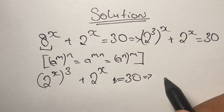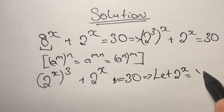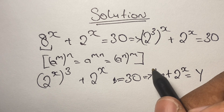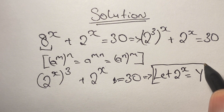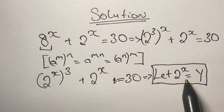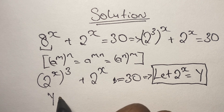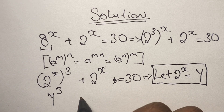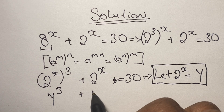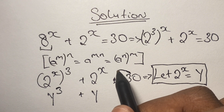From here we let 2 to the power of x equal the variable y. So we have y to the power of 3 plus y — since 2 to the power of x is y — and this is equal to 30.